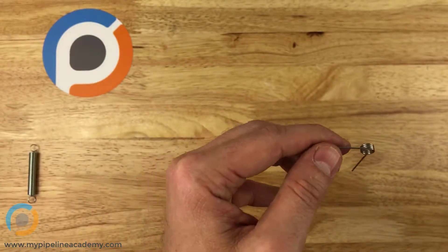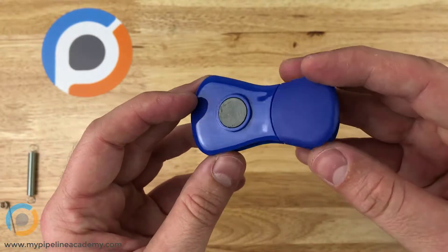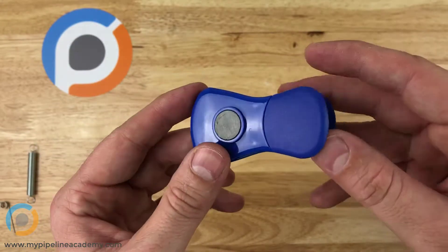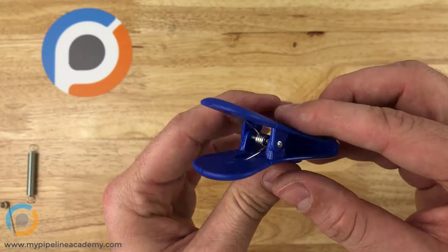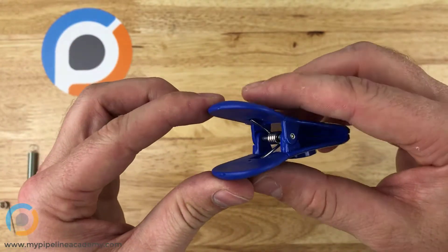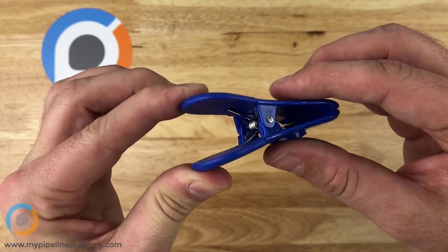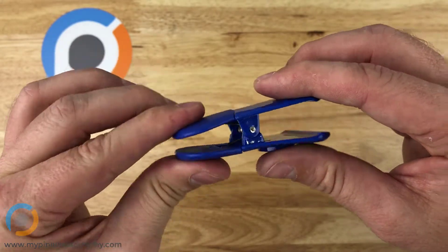A really common example of these is these little refrigerator magnet clips. You can see inside there, there's your torsion spring. You can see it flexing and it produces a rotational motion.